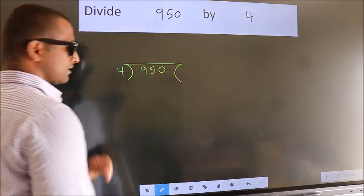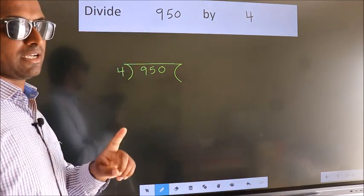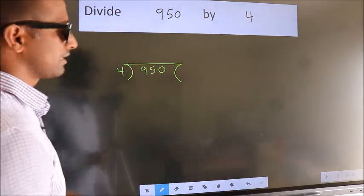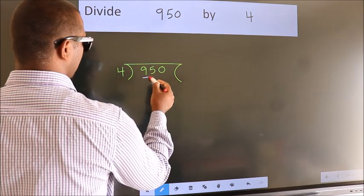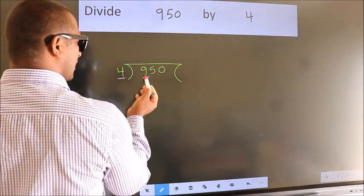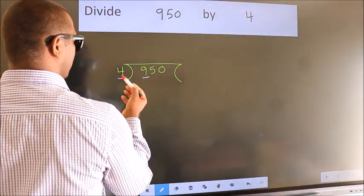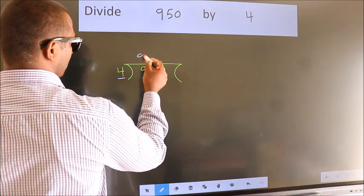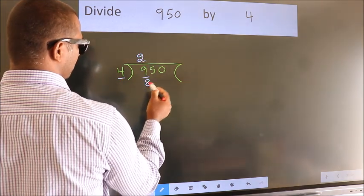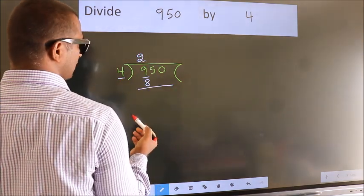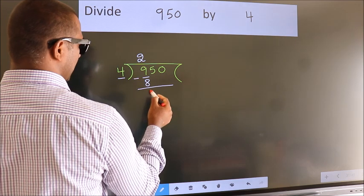This is your step 1. Next, here we have 9, here 4. A number close to 9 in the 4 table is 4 times 2 equals 8. Now, we should subtract. We get 1.